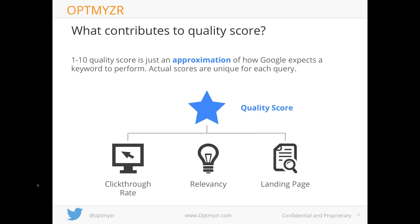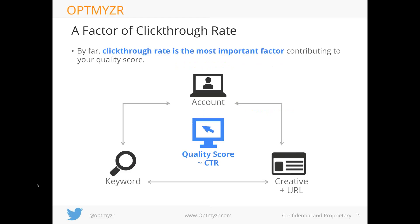What goes into quality score? The quality score you see in your account next to your keyword is a number from 1 to 10, but that's simply an approximation — a guideline Google gives you. The actual scores are unique for each query. Going from a quality score of 2 to 4 doesn't necessarily halve your cost per click, because the 1-to-10 display is just a guideline. The three big factors are click-through rate, relevancy, and landing page.